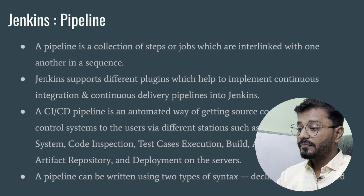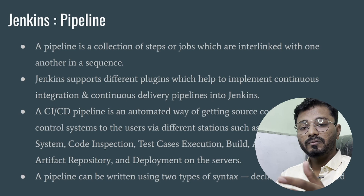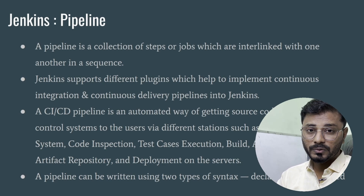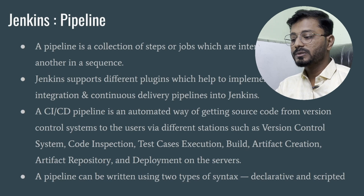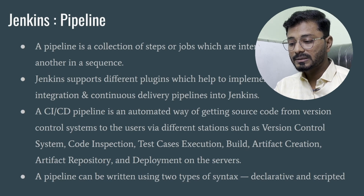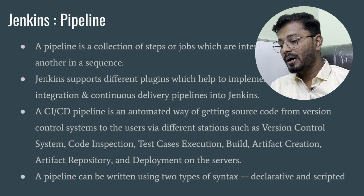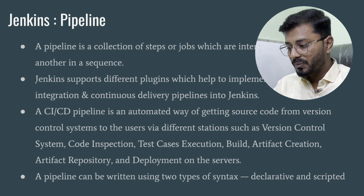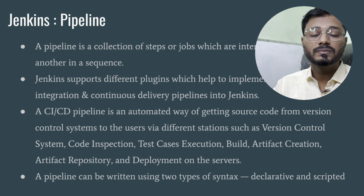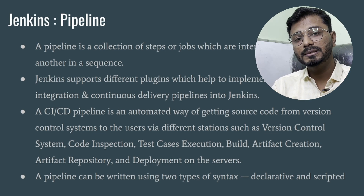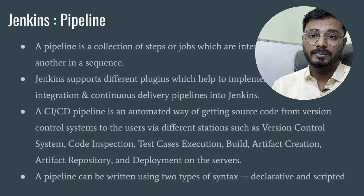Jenkins supports different plugins which help implement continuous integration and continuous delivery pipelines. We have already seen the DSL plugin, which we use to create jobs using DSL language. A CI/CD pipeline is an automated way of getting source code from a version control system to users via different stages such as code inspection, test case execution, build, artifact creation, artifact repository, and deployment on server.